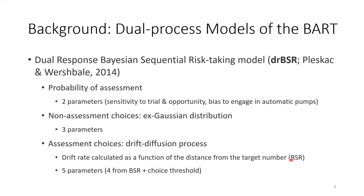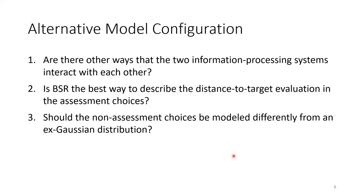The DRBSR model assumes that the probability of an assessment choice is first determined by a logistic function. If the choice is non-assessment, which could be considered as System 1, participants are assumed to make fast and automatic responses, and RTs are modeled by an excursion distribution. For assessment choices, considered as System 2, choices and RTs are modeled using a standard drift diffusion process combined with BSR. While DRBSR provides a promising dual process account, it also raises unanswered questions: are there other ways the two systems interact, such as sequentially? Is BSR the best way to describe the evaluation in assessment choices? And could non-assessment choices be modeled differently from an excursion distribution?